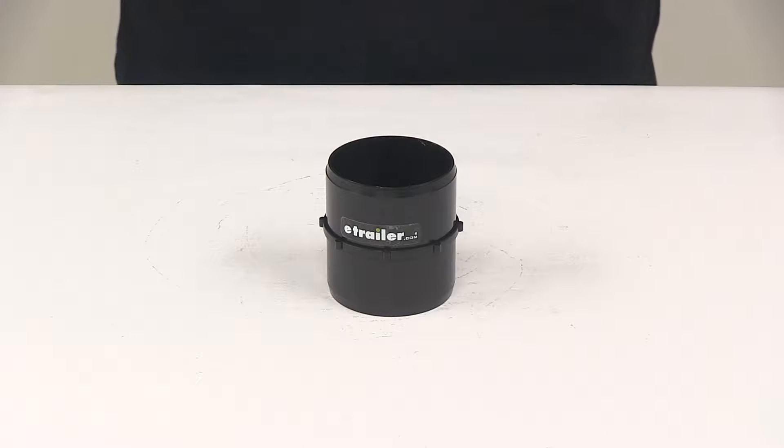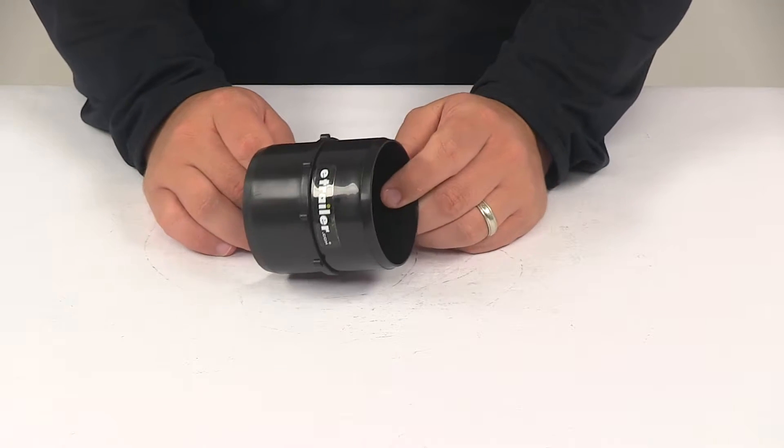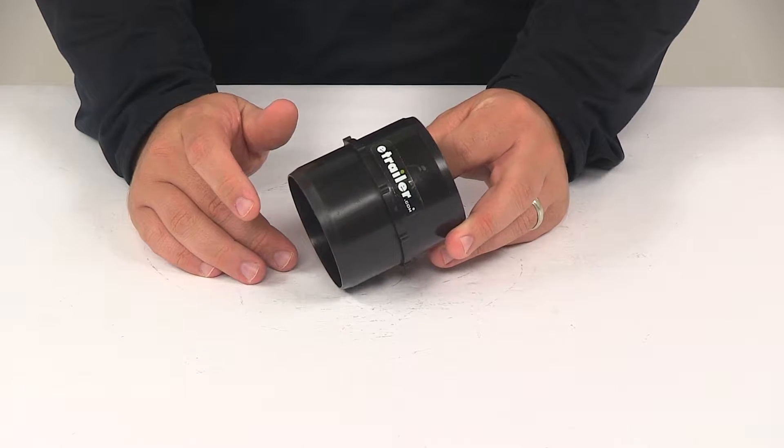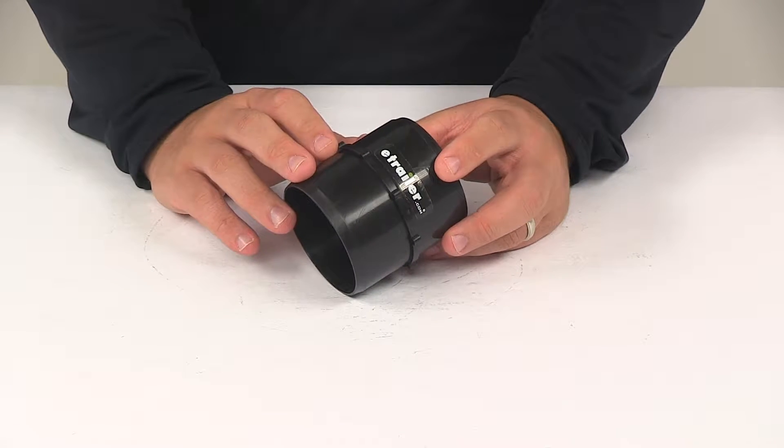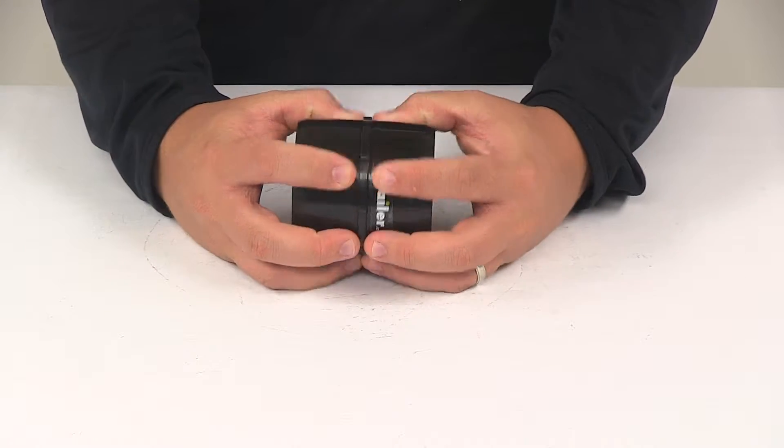Today we're going to be taking a look at the Kamco RV sewer hose internal coupler. This coupler makes connecting two RV sewer hoses together quick and easy without needing to worry about having the correct fittings. All you have to do is slide a hose over each end of the coupler and that's all there is to it.